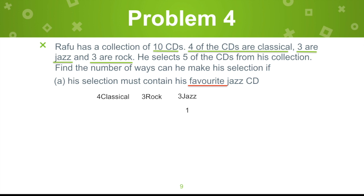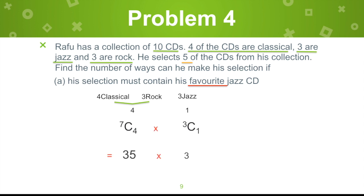So the only possibility to satisfy the restriction is: take 4 from classical or rock. We have 4 classical and 3 rock — that's 4 plus 3 equals 7. So combination of 7 taken 4, multiplied by combination of 3 taken 1 for the favorite jazz CD. Multiply these 2 and we get 105. That's the answer for letter A. Note that the word 'favorite' can also be replaced by 'particular' or 'specific' in word problems.